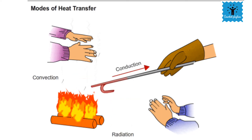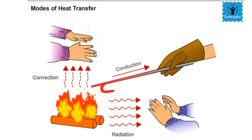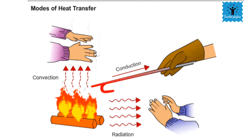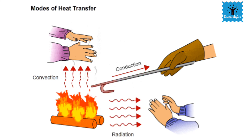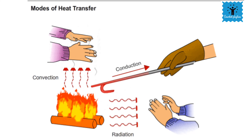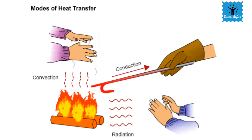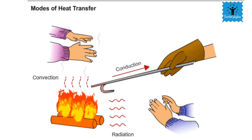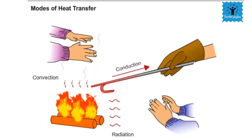When we place a metal rod close to a fire it becomes hot, because metal is a solid and heat is transferred in solids by the process of conduction. If you place your hands above the flame you can feel the heat.